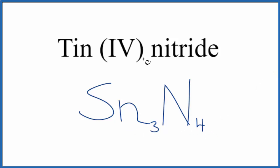Let's check our work, though. We said we have this Roman numeral 4, so this is 4+. And then we said the nitrogen forms the nitride ion, which is 3 minus. 3 times 4 plus, that's 12 plus. 4 times 3 minus, that's 12 minus. These two numbers, they add up to 0. We have a net charge of 0.